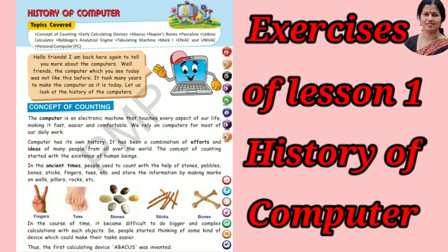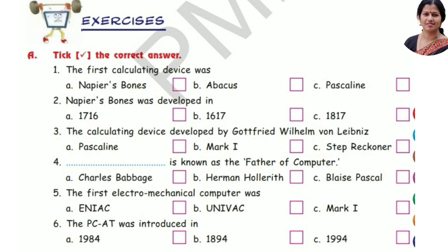Welcome back. In this video I am doing the exercises of Lesson 1: History of Computer. First, tick the correct answer. Number one: the first calculating device was option B, Abacus. Napier's Bones was developed in option B, 1617.